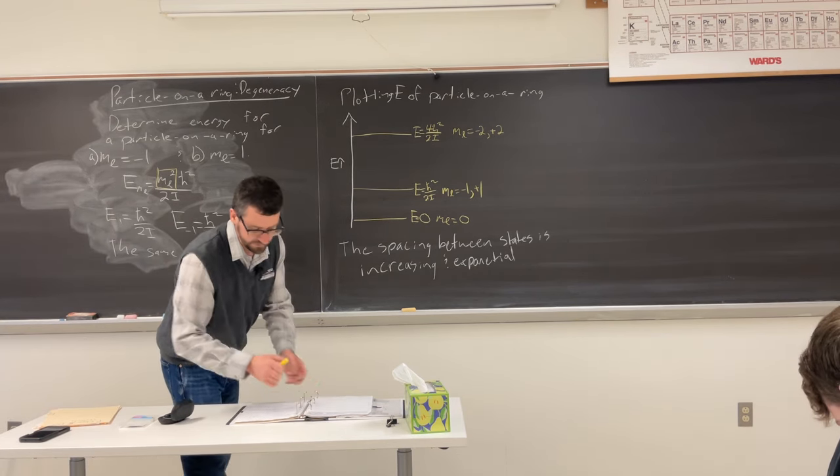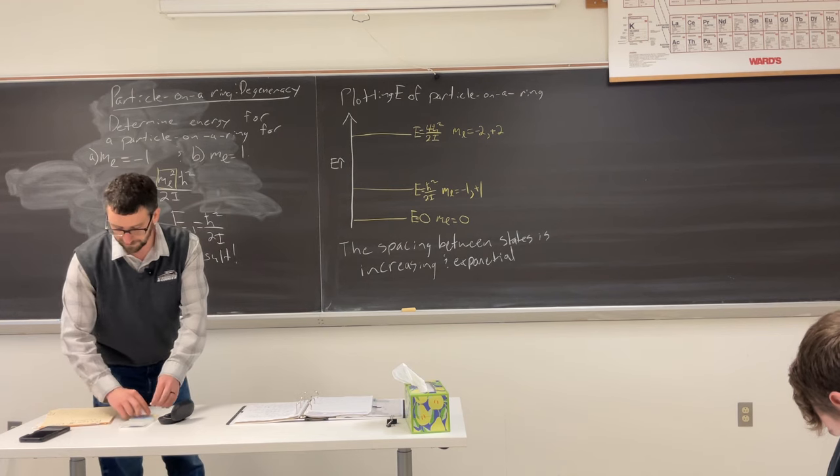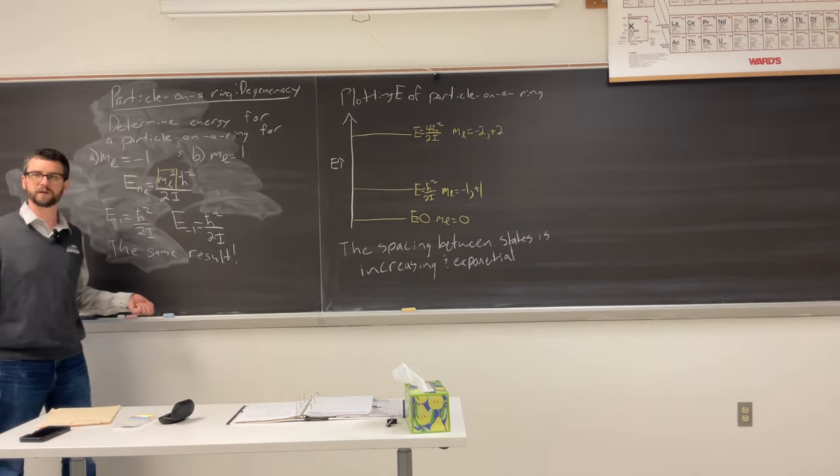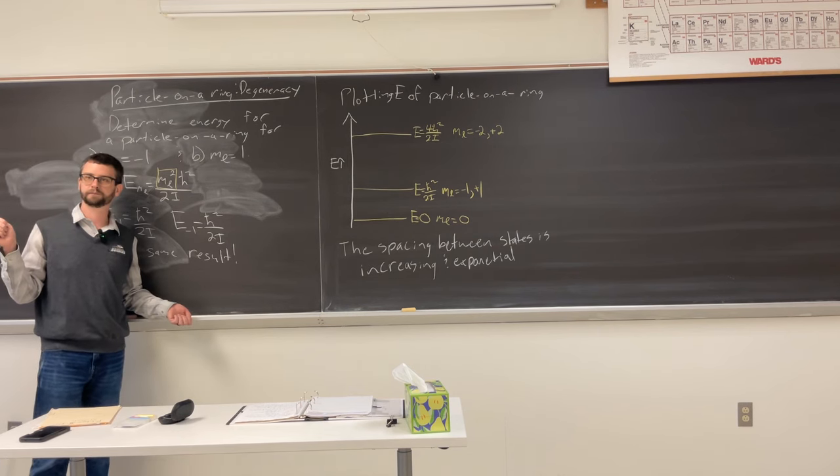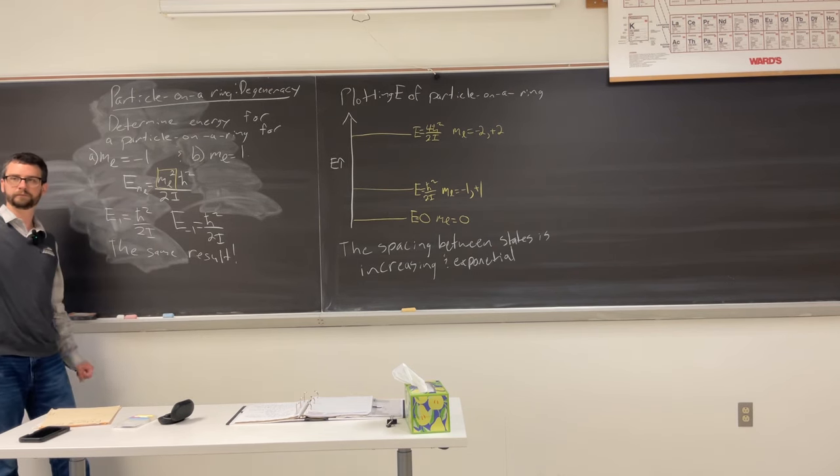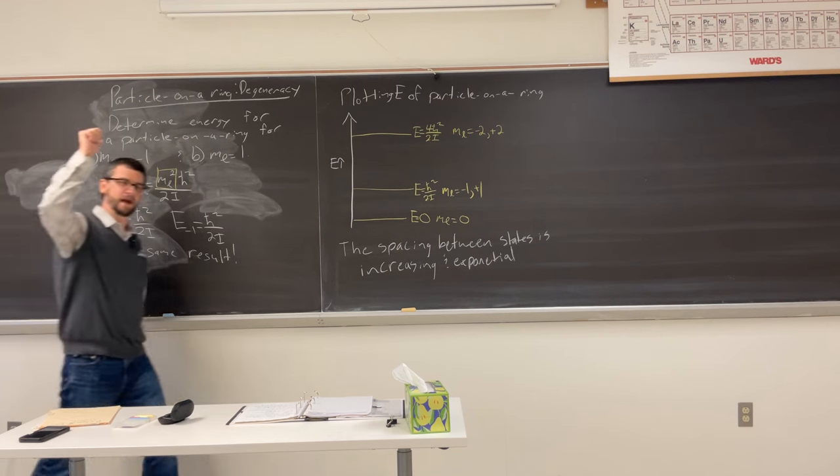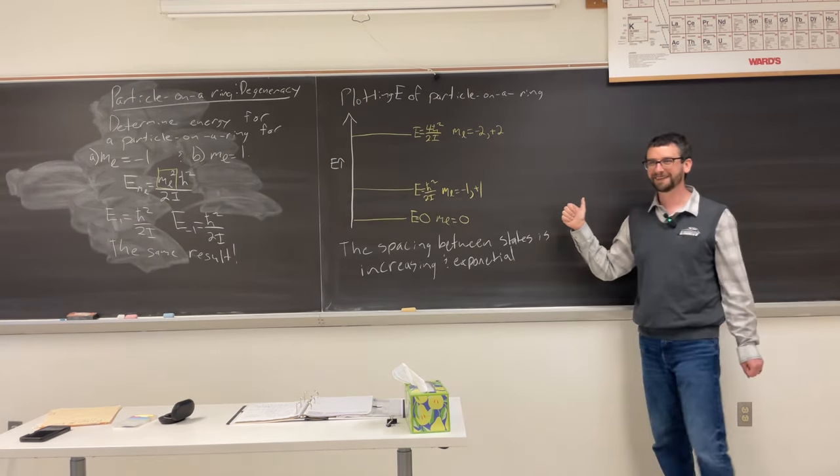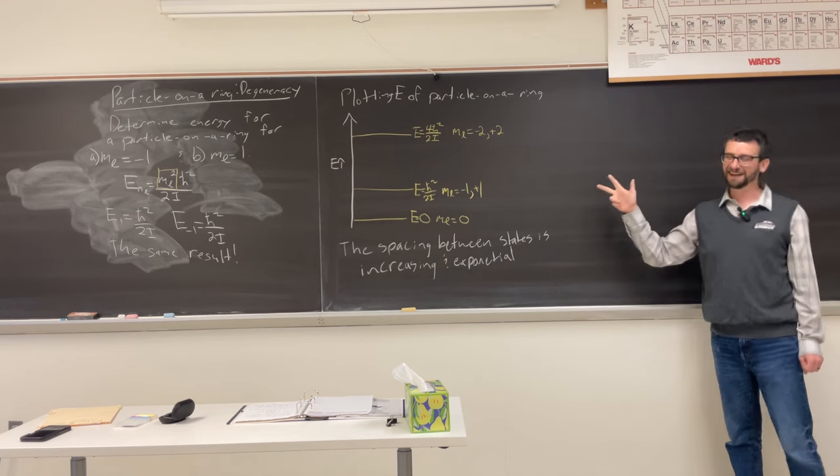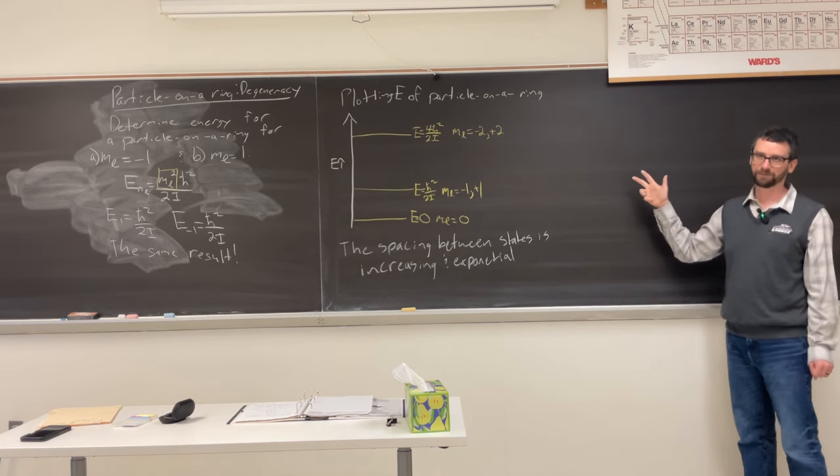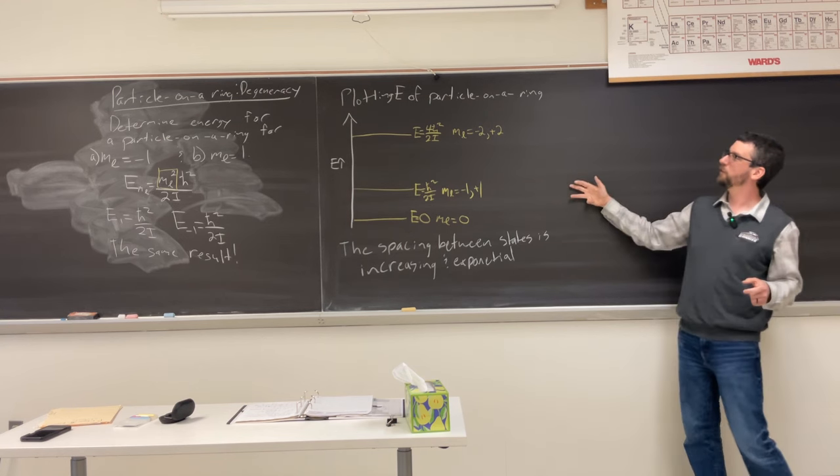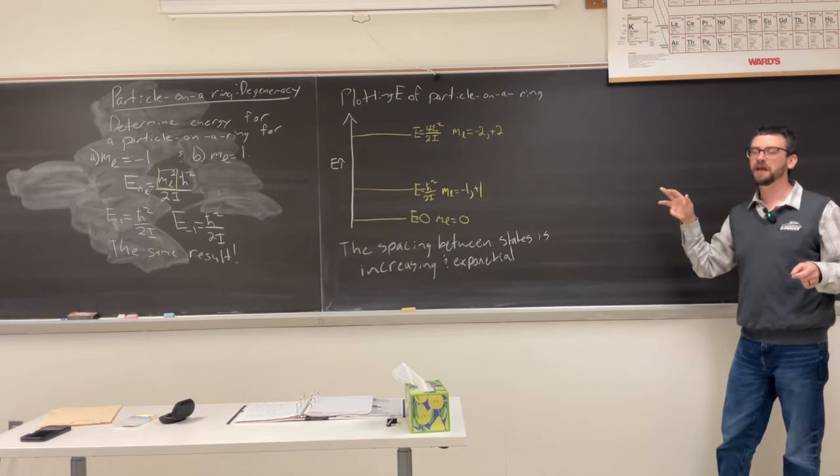Anyways, let's think back to the different quantum systems we've looked at so far. What are the model systems we've considered? 1D particle in a box. What else? 3D and 2D, right? What other systems? Particle in a ring, we'll worry about that one in a minute.